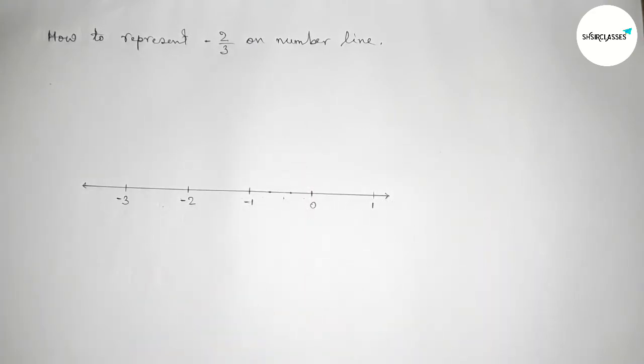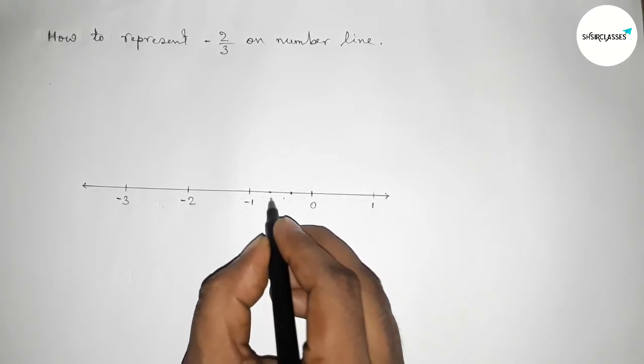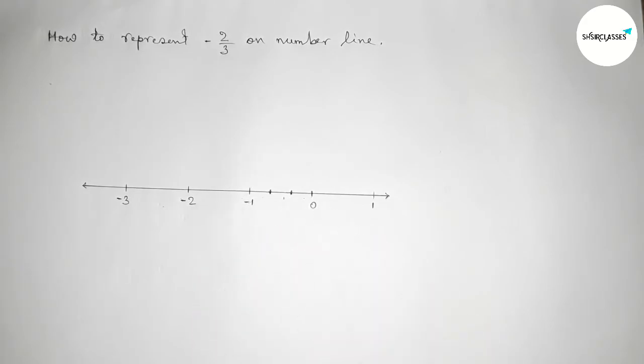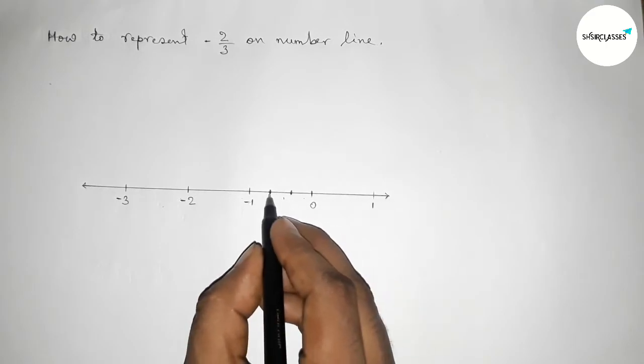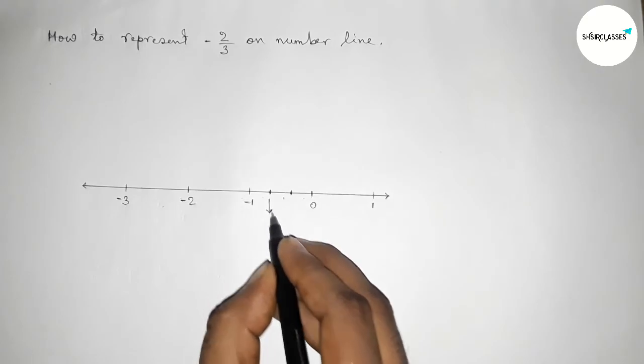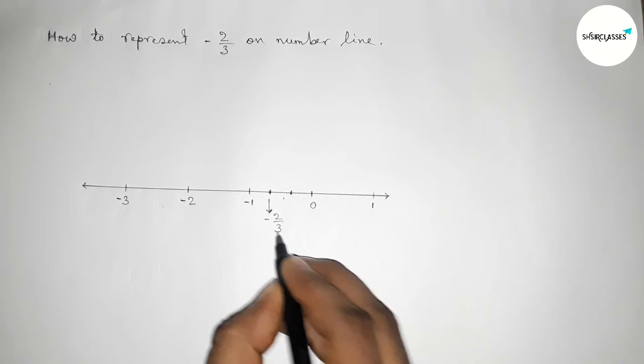So here this is minus 1 by 3, and this one minus 2 by 3. So this one minus 1 by 3, and this one minus 2 by 3, or minus 2 thirds on number line.